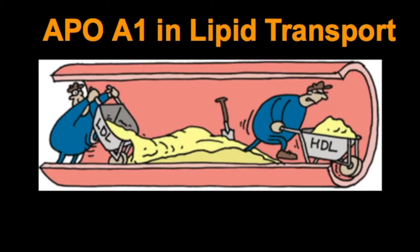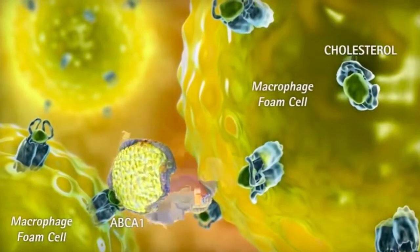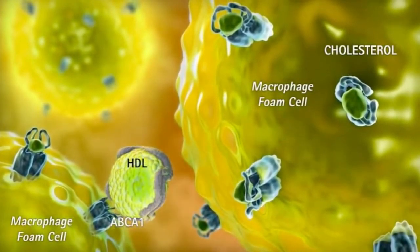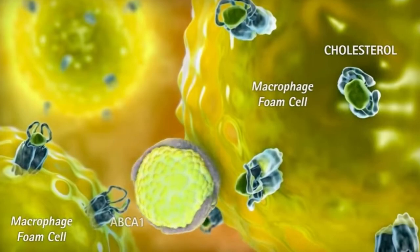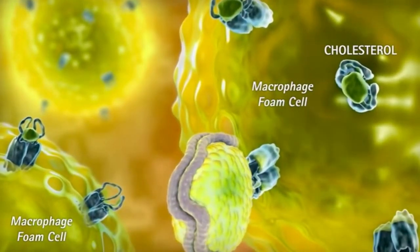ApoA1's primary role is in lipid transport and specifically reverse cholesterol transport. The ABCA1 transporter operates to harvest this free cholesterol and deliver it to the cell membrane where it is received by poorly lipidated ApoA1 to create nascent HDL.